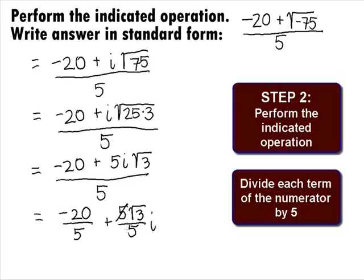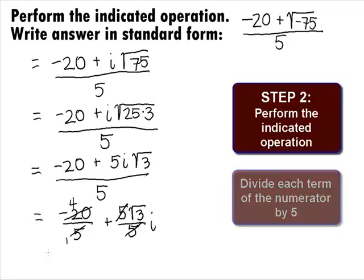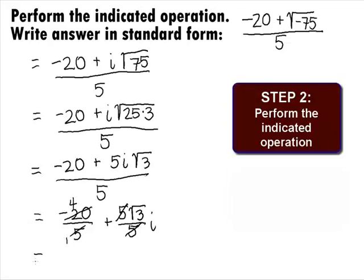We can simplify each fraction. And when we do this, we get negative 4 plus square root of 3i.